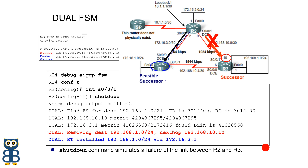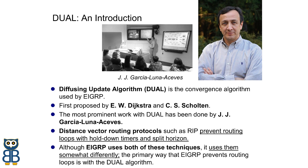Now suppose the best path goes down — the router immediately checks the topology table for a feasible successor. The Diffusing Update Algorithm decides the best path for data transmission for EIGRP. The main function of the Diffusing Update Algorithm is to prevent routing loops.